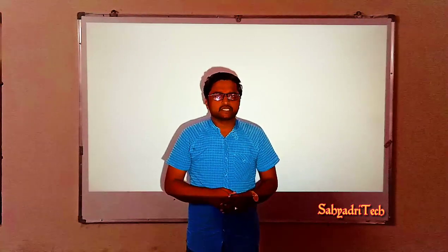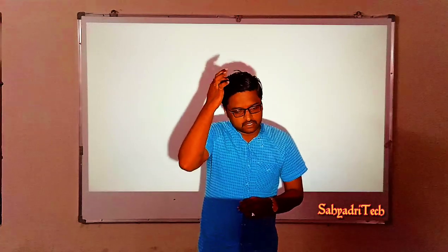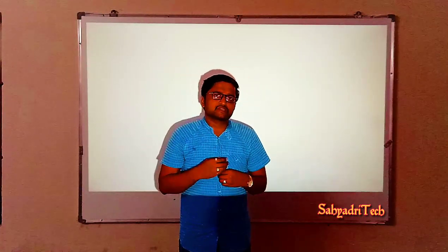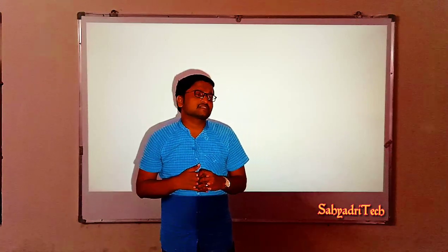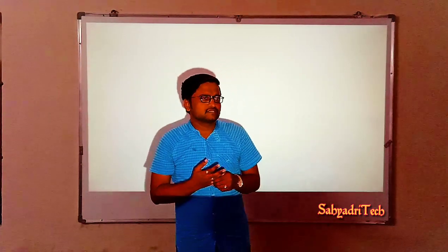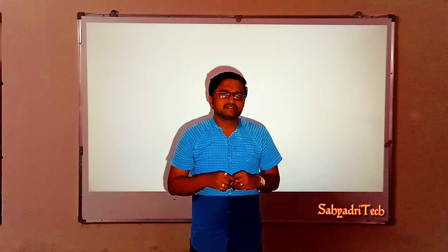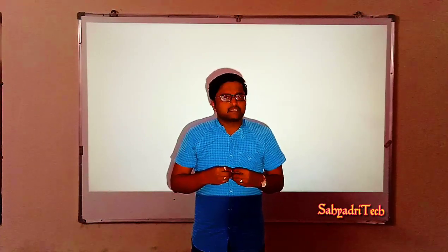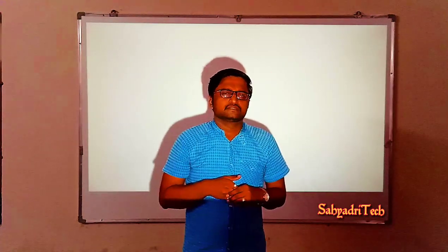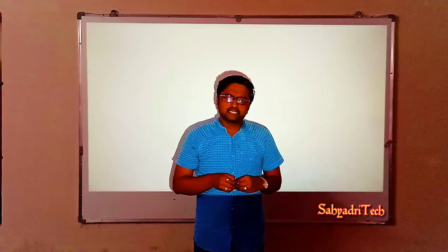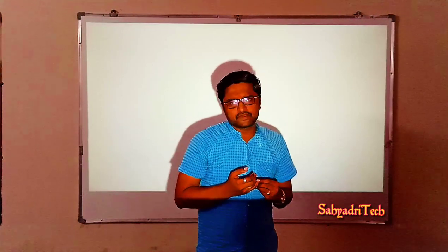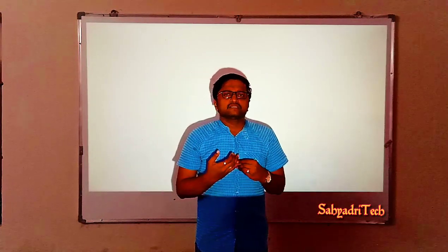Hello everyone, welcome back to the channel. In the previous session we discussed about galvanic cells or voltage cells, and we talked about the components of a galvanic cell — two half cells, a voltmeter, switch, connecting wires, and a salt bridge. We also considered the significance of a salt bridge. A galvanic cell or voltage cell is a device in which chemical energy is converted into electrical energy. Typical examples include the Daniel cell and nickel-cadmium cell.